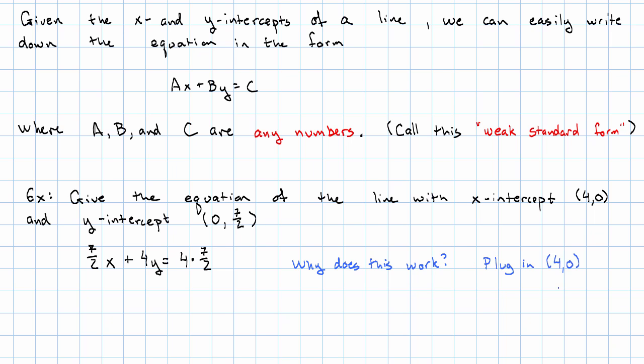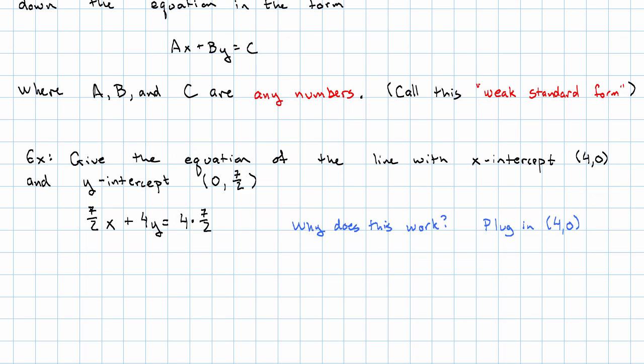Now why does this work? Well, if I plug in the point 4, 0, x equals 4, y equals 0, I'll have 7 halves times 4 plus 4 times 0 is 4 times 7 halves. This is 0 and this is true because multiplication is commutative.